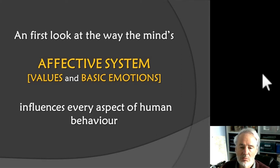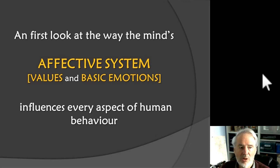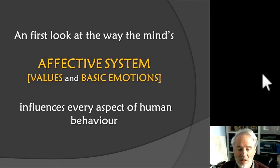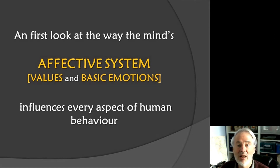In a sense, this will be an example of how the cognition framework can be used. In particular, I'd like to emphasise how values — the way we value things — and basic emotions really influence every aspect of human behaviour. The traditional distinction between mind and heart is very misleading. We find that the heart has a much greater influence on the mind than we would like.